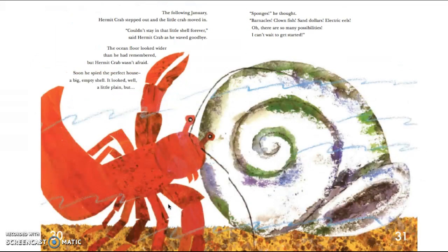The following January, Hermit Crab stepped out, and the little crab moved in. 'Couldn't stay in that little shell forever,' said Hermit Crab as he waved goodbye. The ocean floor looked wider than he had remembered, but Hermit Crab wasn't afraid. Soon he spied the perfect house — a big, empty shell. It looked, well, a little plain, but... 'Sponges,' he thought, 'barnacles, clownfish, sand dollar, electric eels. Oh, there are so many possibilities. I can't wait to get started.'